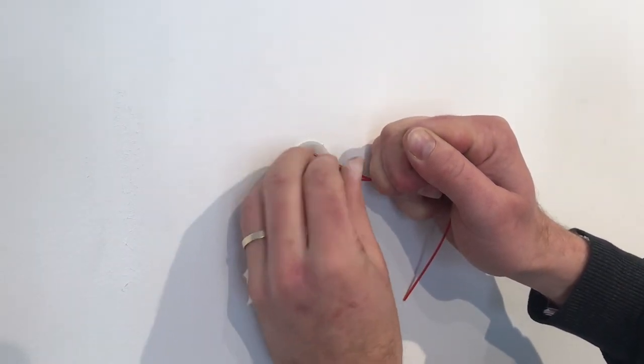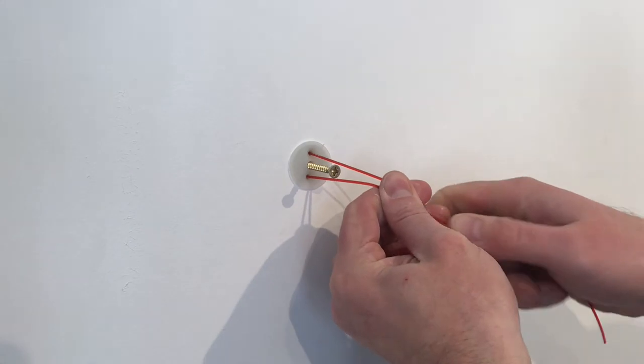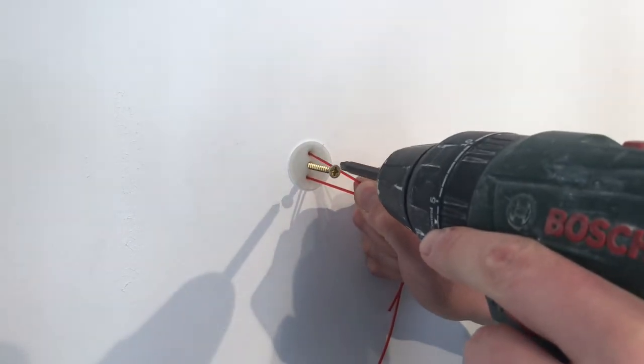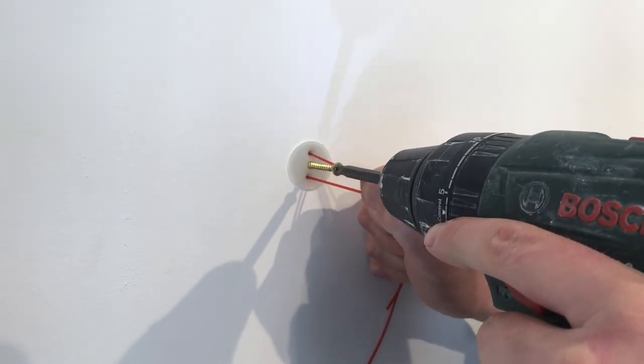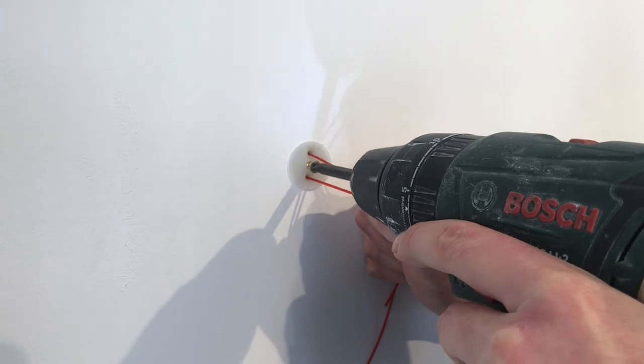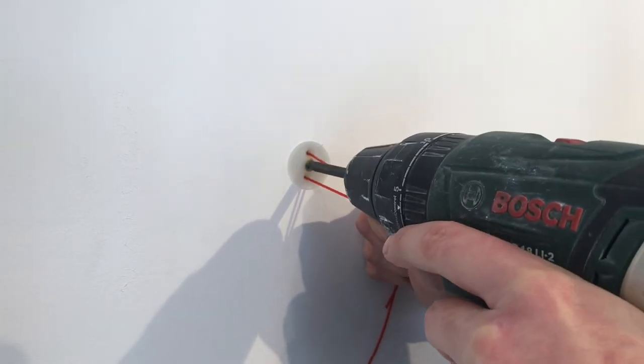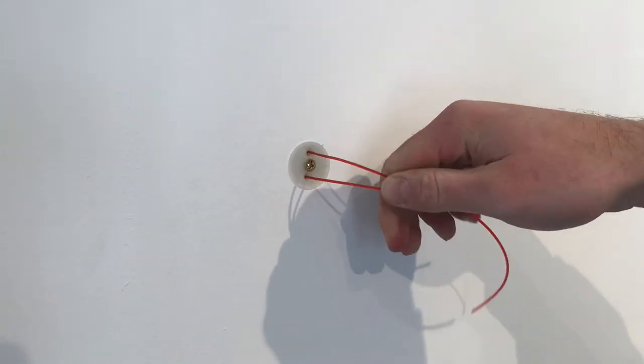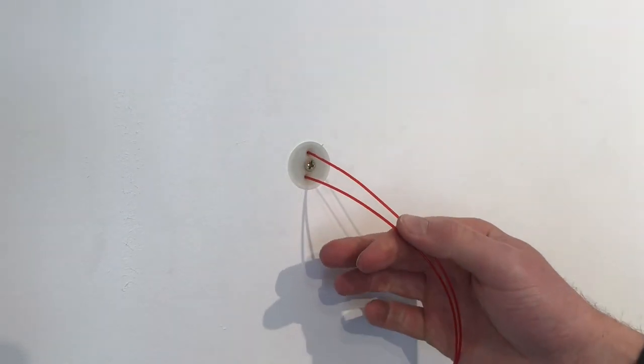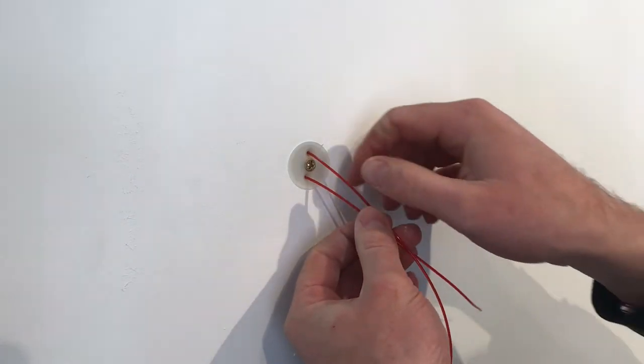We can then place our center screw in and fix the center screw. You will feel the backing plate tighten as the screw takes hold and forces it against the wall.